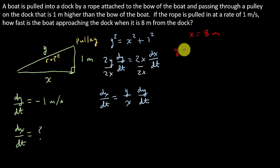Y is just equal to the square root of this. That's eight squared plus one squared. So Y is equal to the square root of 65, and that's meters.